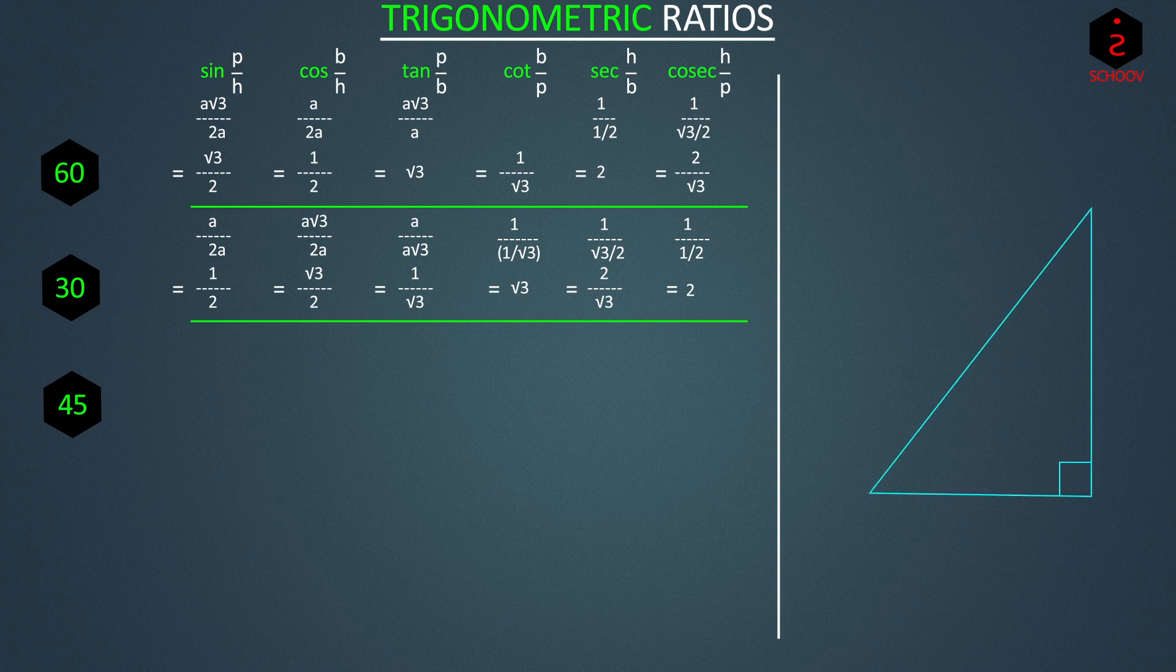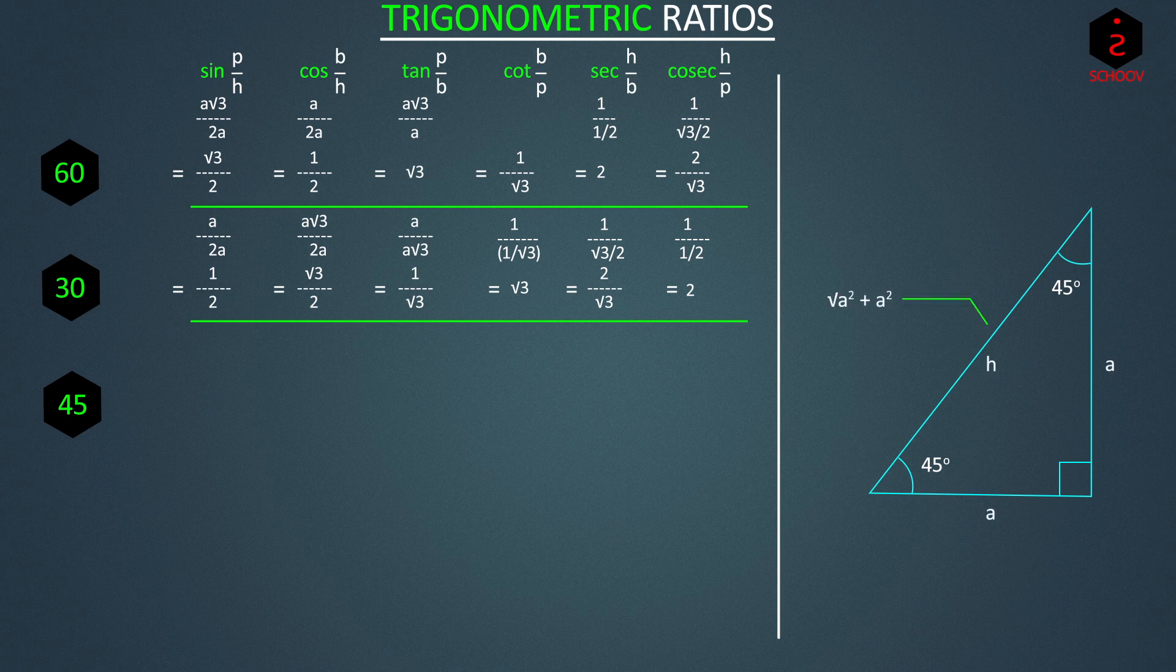So in a right-angled triangle, if theta is 45, the other angle also becomes 45, which means that the triangle is an isosceles triangle. Both base and perpendicular are equal, say A. So hypotenuse becomes under root A square plus A square root 2 A square, that is A root 2. Let's find the ratios now. Sin 45 is perpendicular by hypotenuse, that is A by A root 2, 1 by root 2. Cos 45 is base by hypotenuse, which is again A by A root 2, 1 by root 2.